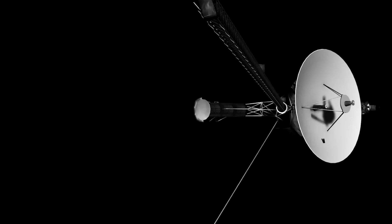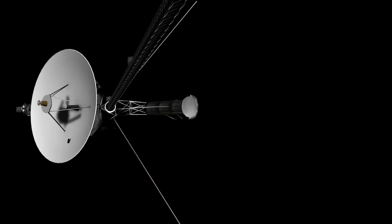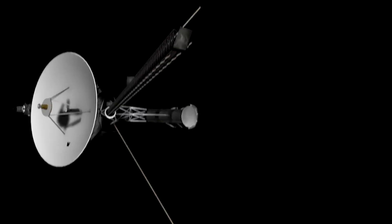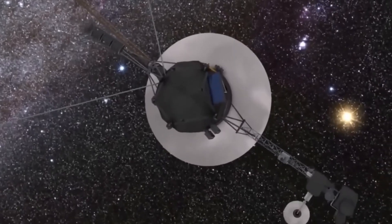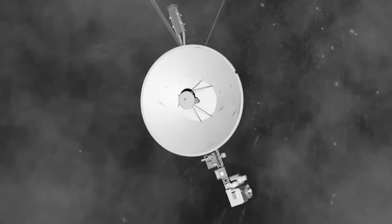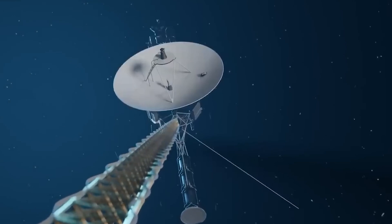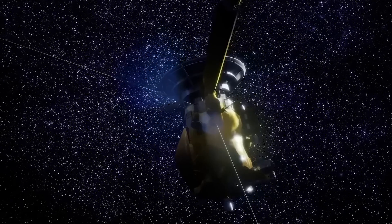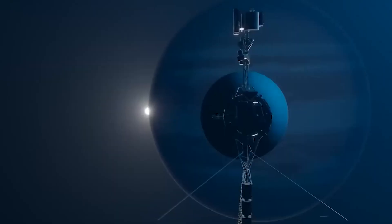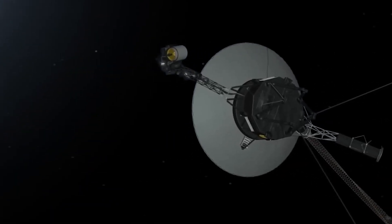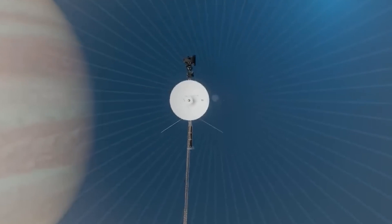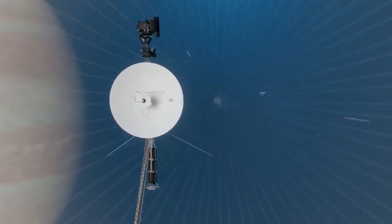Engineers acted quickly and sent a command to Voyager 1 instructing the AACS system to shift to the correct computer to transmit the telemetry data. Although the solution was low risk, it required a great deal of patience because of the significant delay caused by the distance between Earth and Voyager 1. Radio signals take nearly 22 hours to travel back and forth, so the troubleshooting process required careful coordination.